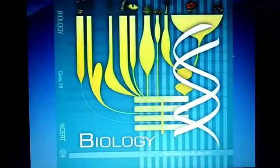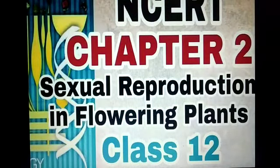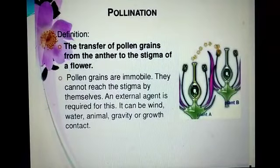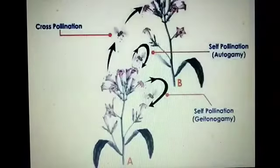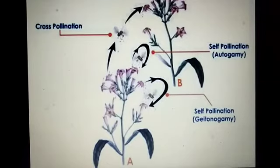Hello students, today we are going to continue our second chapter: sexual reproduction in flowering plants. In my previous video, we discussed gamete transfer in flowering plants, that means the process of pollination — the transfer of pollen from the anther to the stigma of a flower — and the types of pollination: autogamy, geitonogamy, and xenogamy.